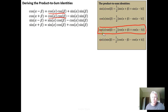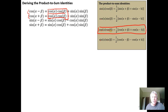To derive the product-to-sum identity, we pick those two identities and then add or subtract them in a way that keeps what we want — in this case the product of two cosines — and eliminates what we don't want, which is the product of two sines. If we wanted to prove the product of two sines instead, we would add or subtract in a way that got rid of the cosines. But here we want the product of two cosines.